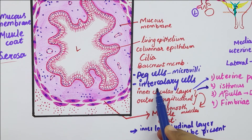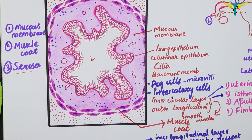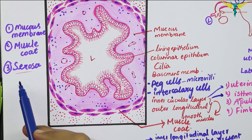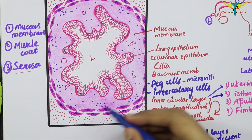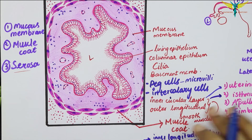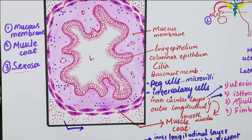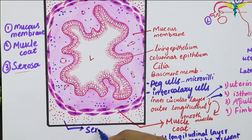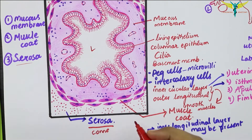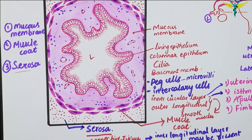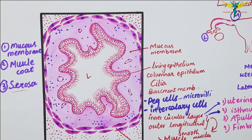Now coming to the third layer — the serosa. The serosa consists of the mesothelium, which is supported by connective tissue. This is the outermost layer of the uterine tube wall.